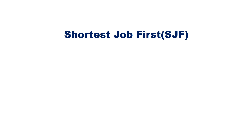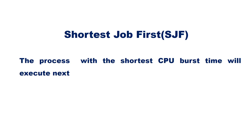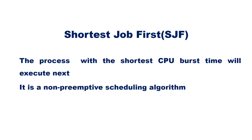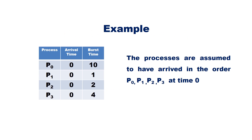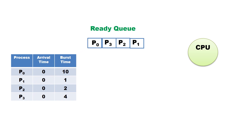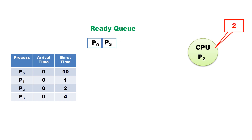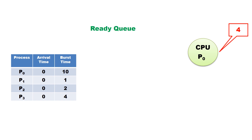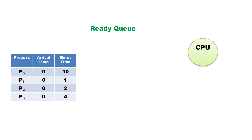The next scheduling algorithm is Shortest Job First (SJF). In SJF, the process with the shortest CPU burst time executes next. It is a non-preemptive scheduling algorithm. Using the same example, with all processes arriving at time 0: P1 (burst=1) is placed first, then P2 (burst=2), then P3 (burst=4), then P0 (burst=10). CPU is allocated to P1 first; after 1ms it releases, then P2 gets the CPU; after 2ms P3 runs for 4ms; then P0 runs for 10ms.